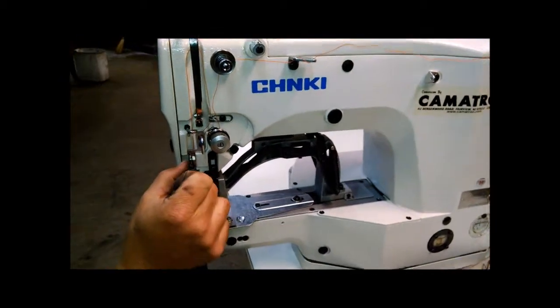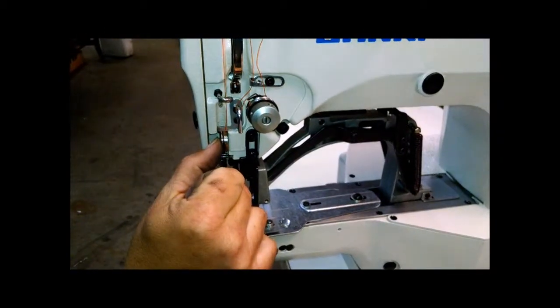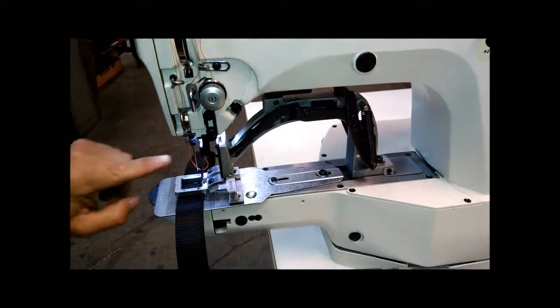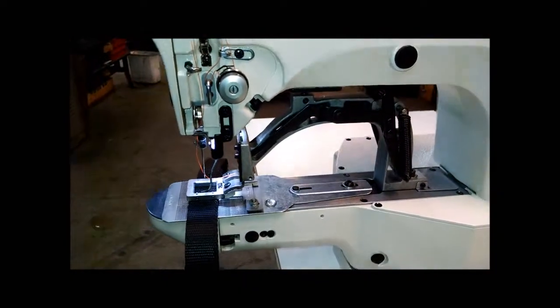One is there's a tension thread holding device here. There's also a light underneath the machine, which when we power it on, you'll see there's a light here. It's built into the sewing edge.